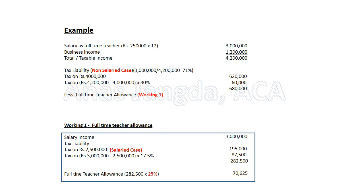After drawing this figure, you return to the main question: less full-time teacher allowance (Working Number 1) = 70,625. Subtracting 70,625 from 6,80,000, you arrive at net tax liability of 6,09,375. This was our first tax credit — full-time teacher allowance. The key point to remember: when you calculate this tax credit in the working, regardless of whether the person is salaried or non-salaried, you always use salary slab rates for calculating the tax credit amount.